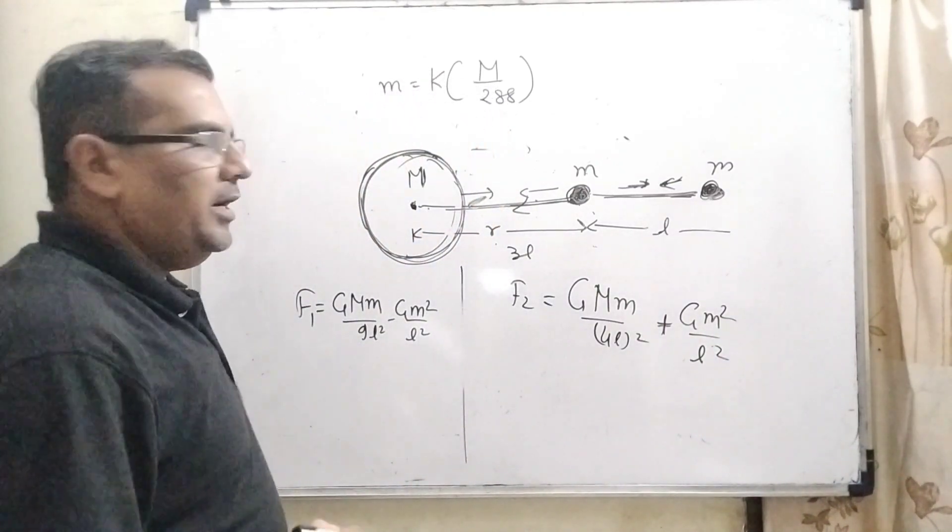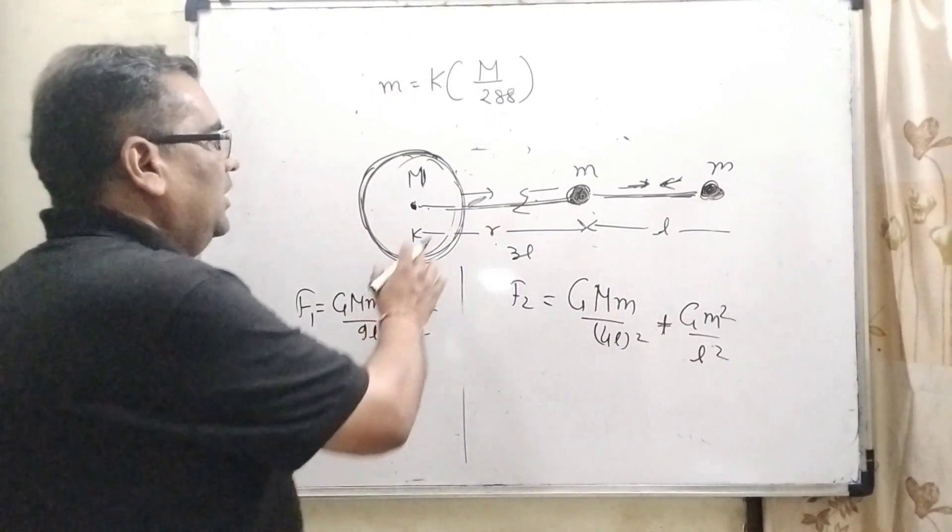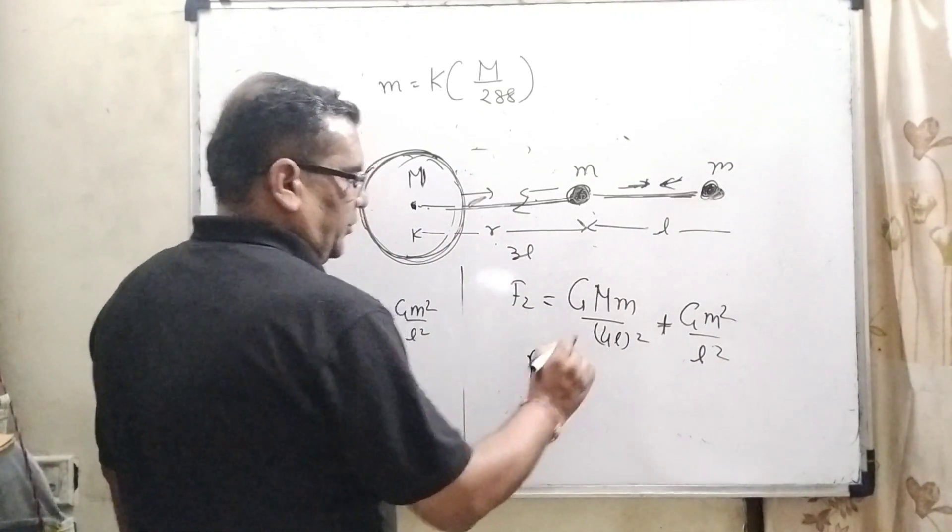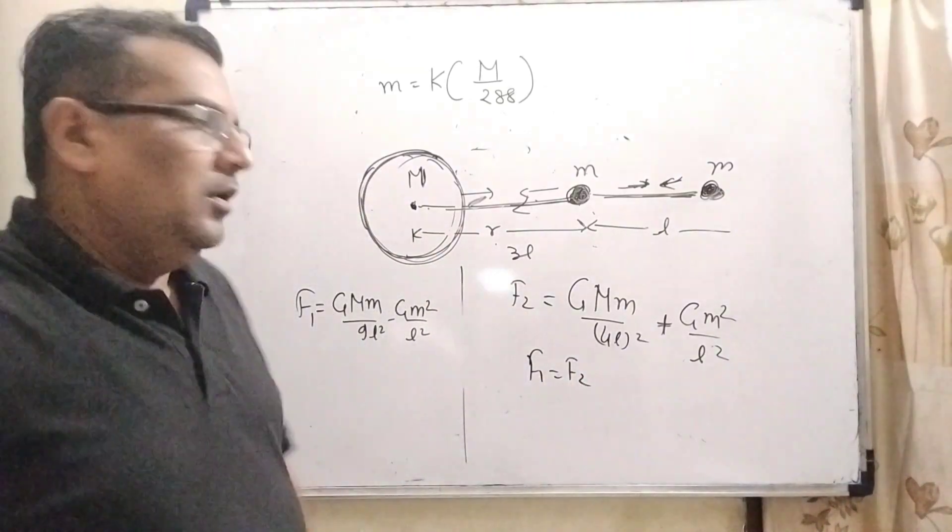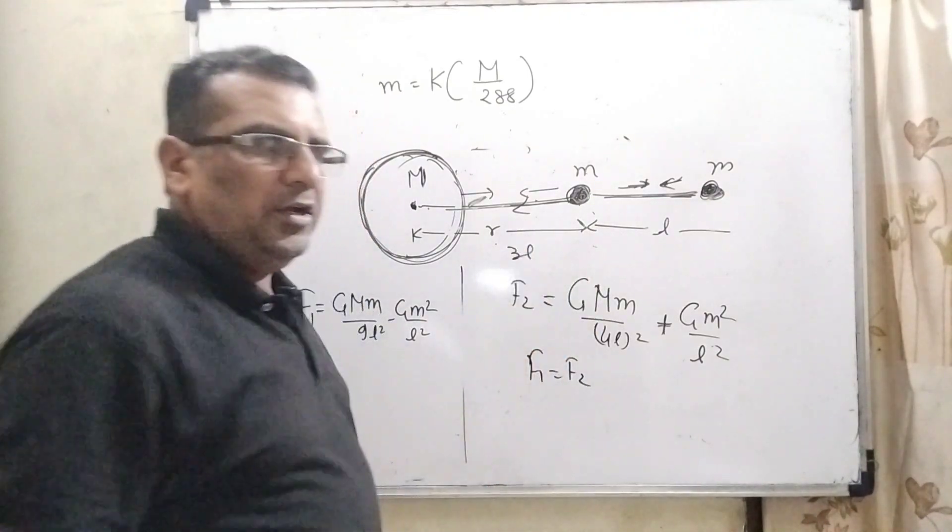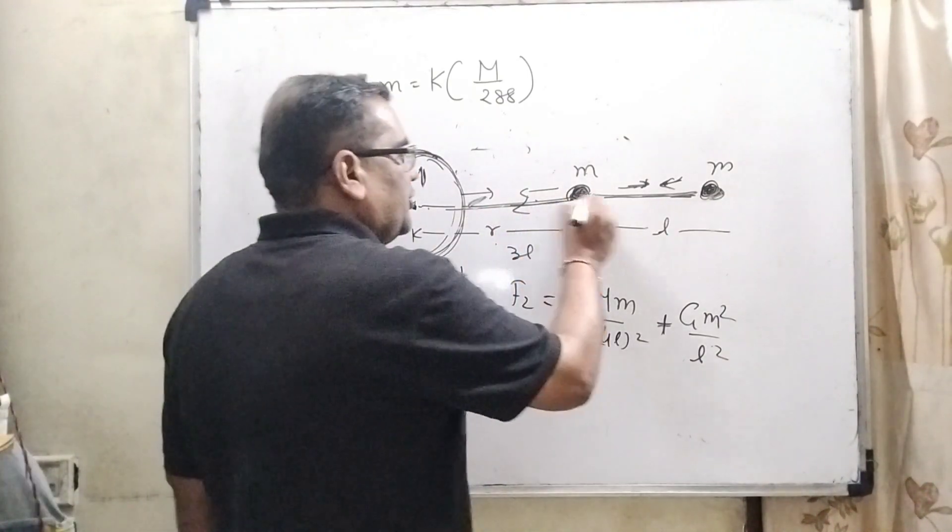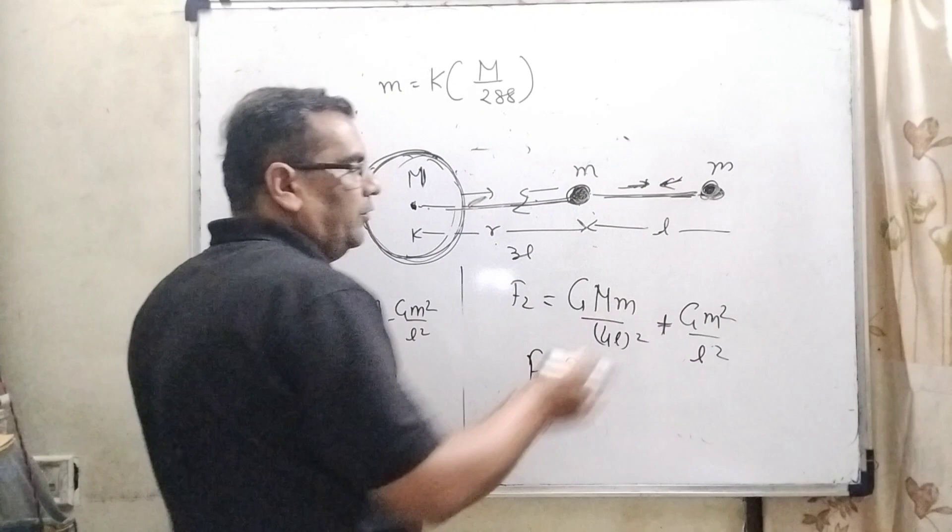So here F1 and F2. Now in this case, F1 equals F2. Why are F1 and F2 equal? Because they are mutual interactions, and therefore they are equal.